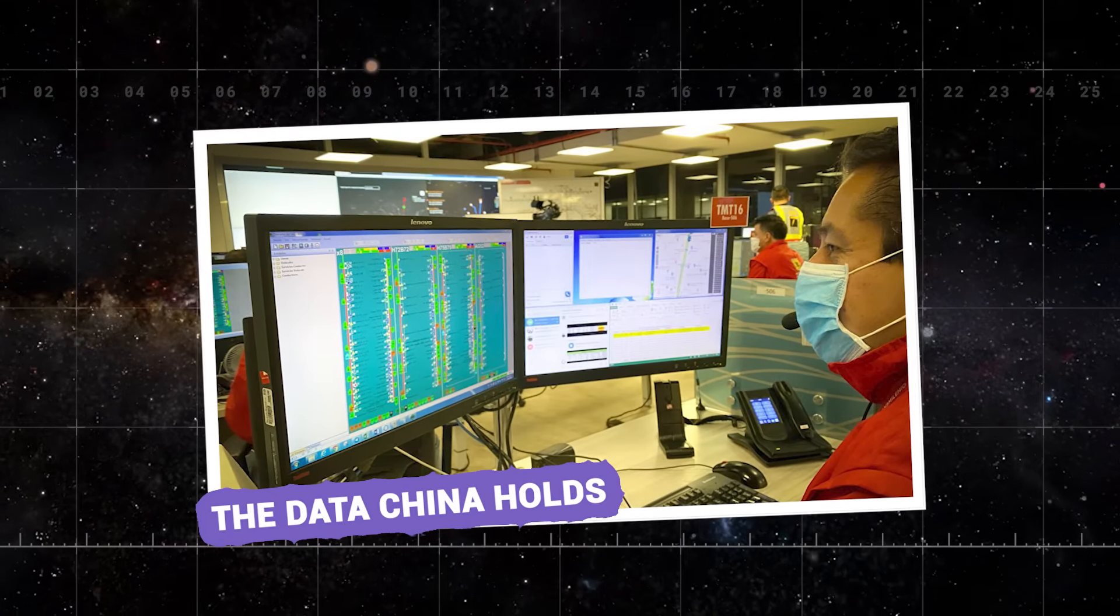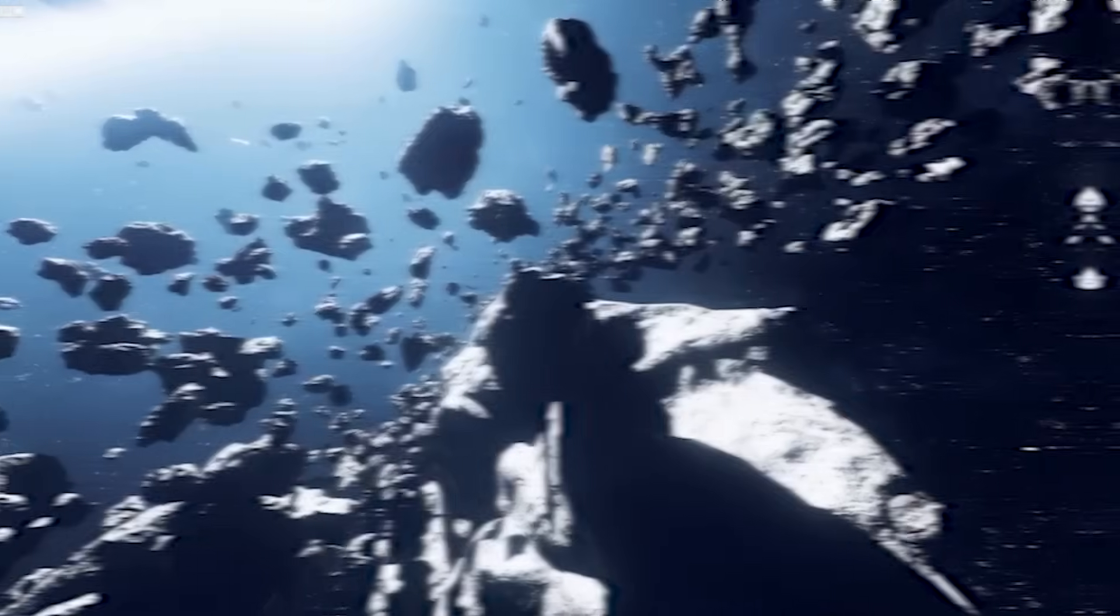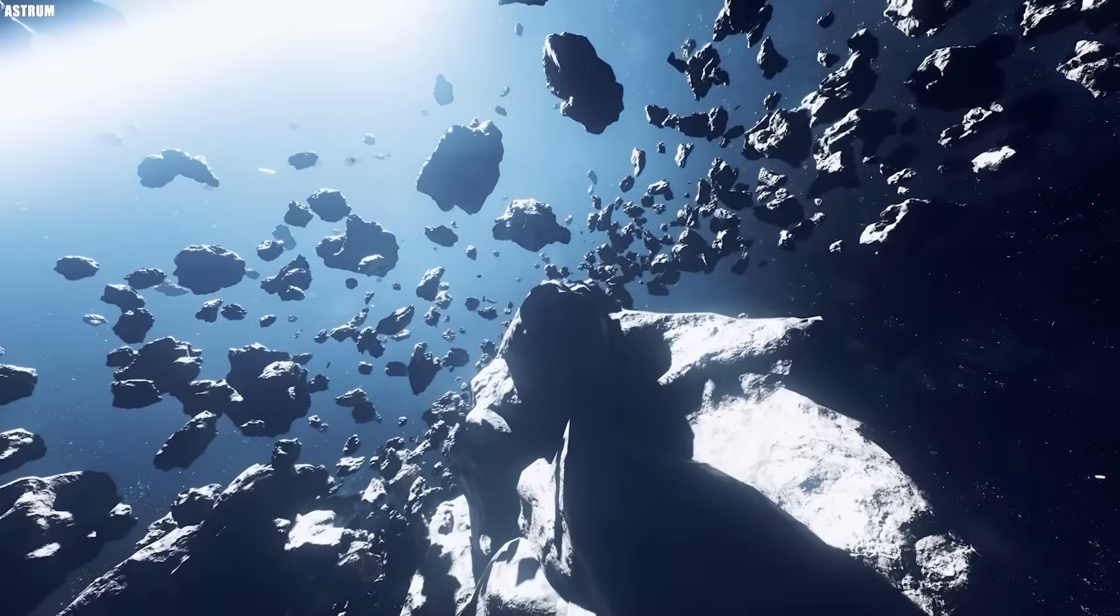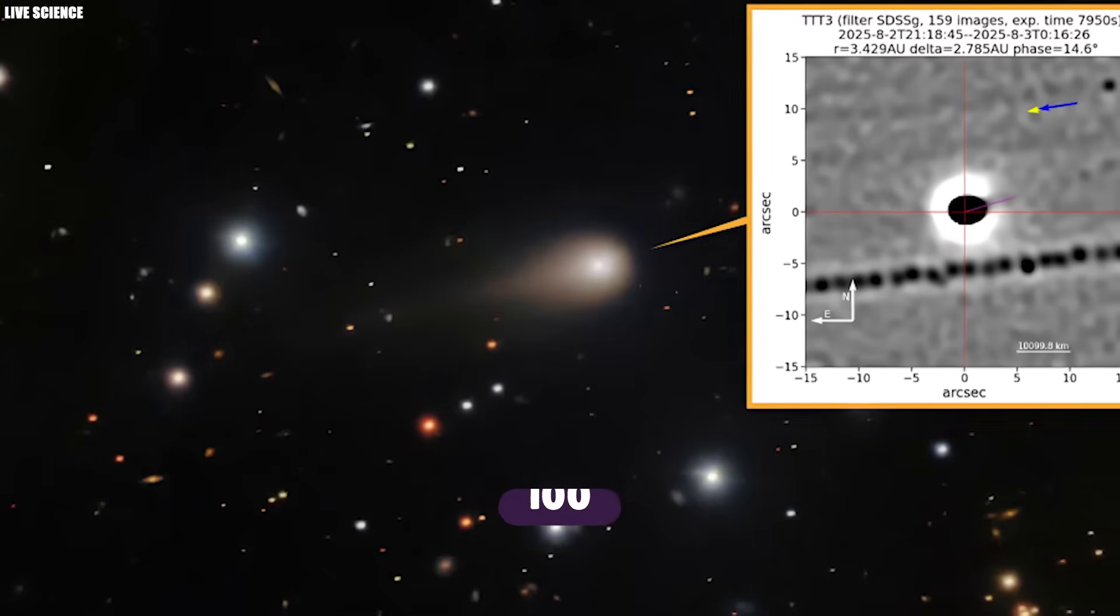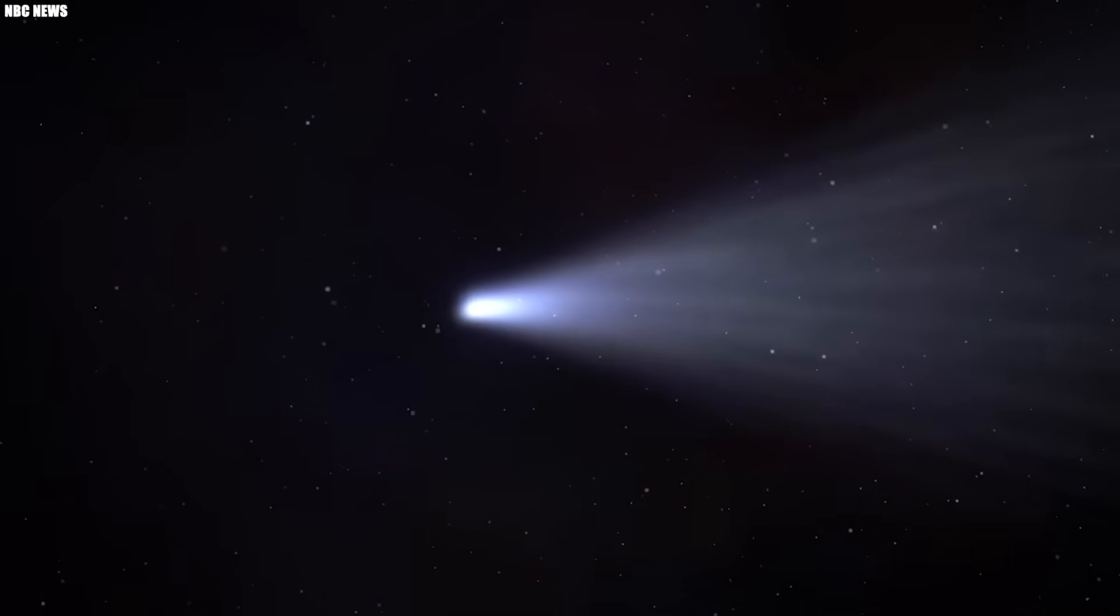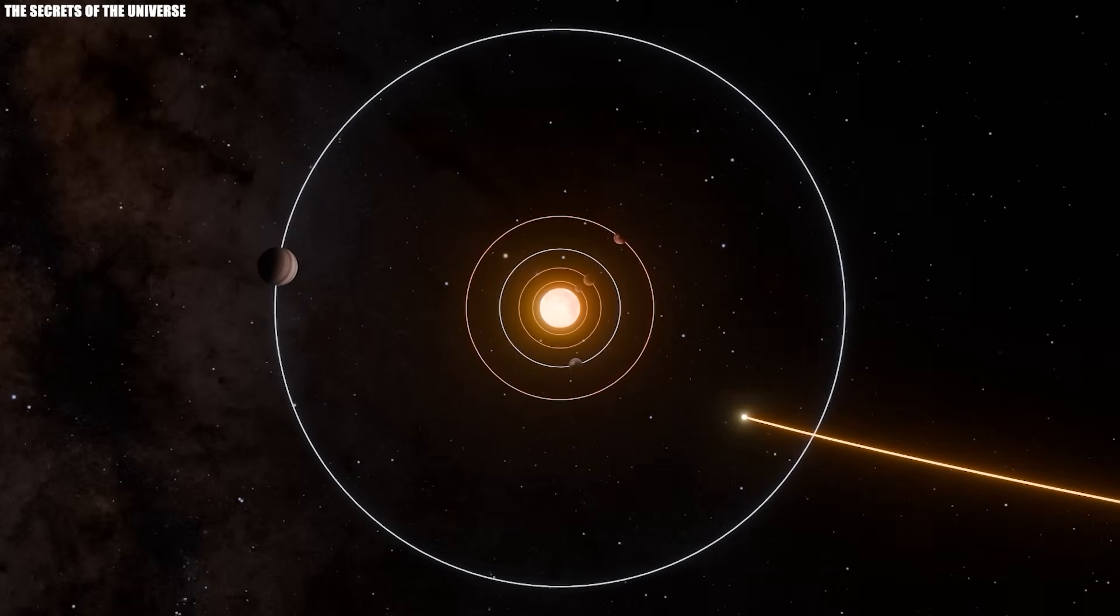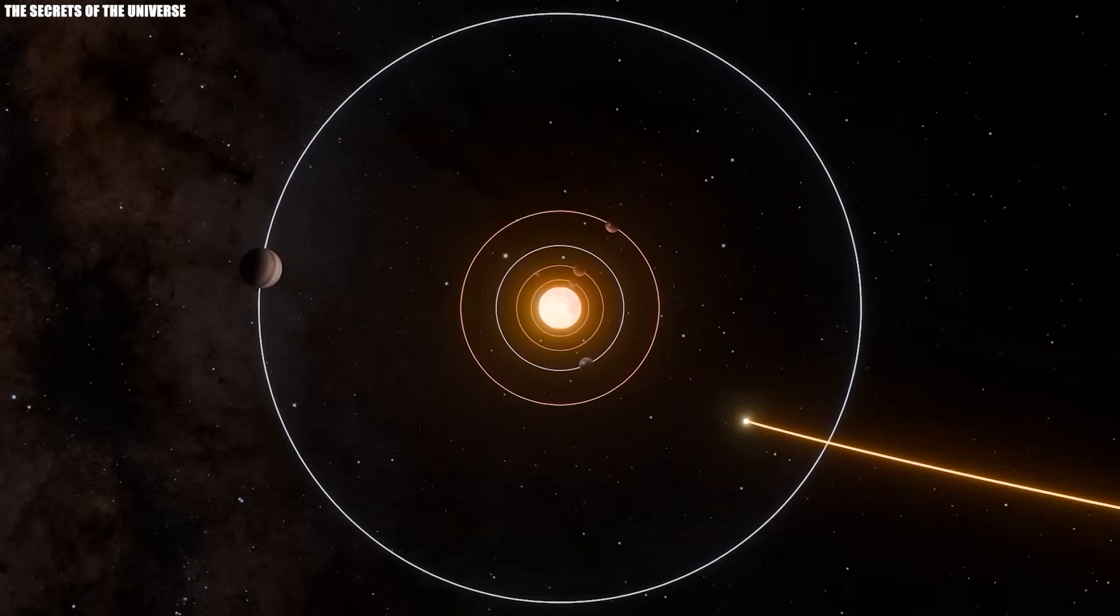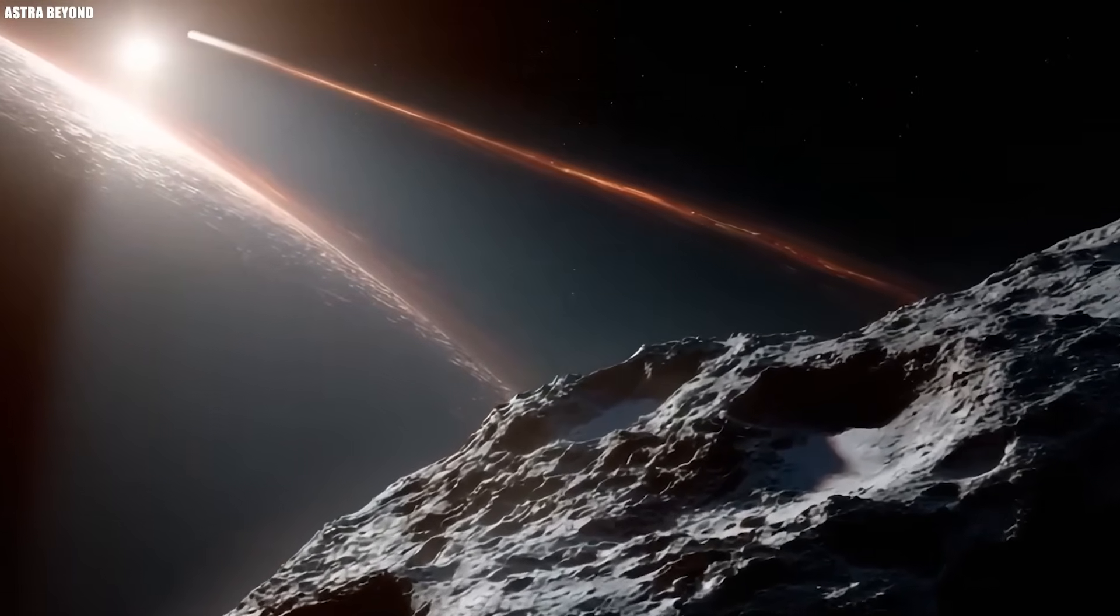The data China holds. Comets are supposed to be predictable. Dirty snowballs drifting through space, warming up as they near the sun, glowing softly, shedding ice and dust. We have seen hundreds of them, tracked them, named them. But 3I Atlas is not one of those. It does not behave like them. It does not belong to the same neighborhood. And if what some believe is true, this may be one of the most important objects humanity has ever seen, and we may have missed its most revealing moments.